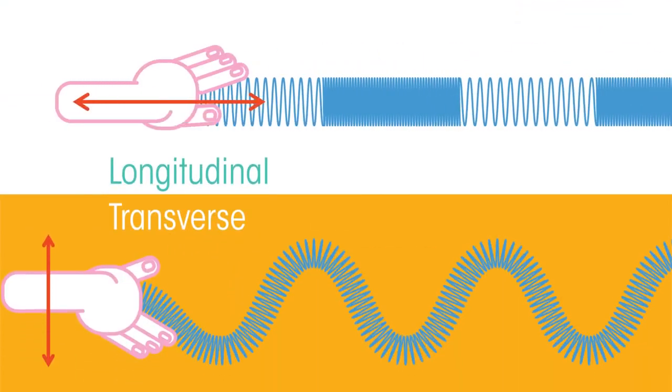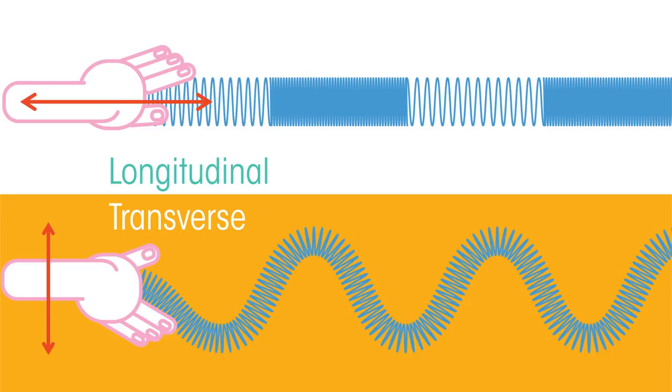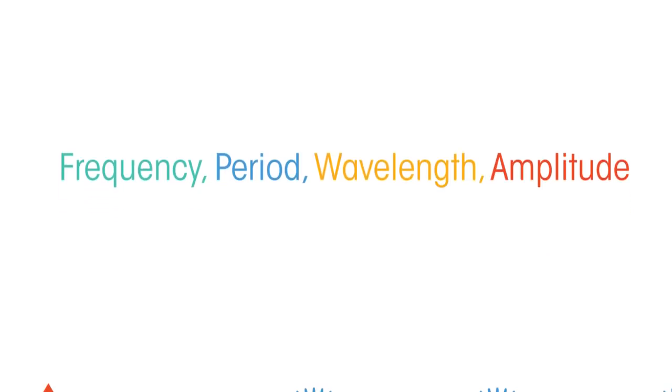There are two types of waves, which we look at in more detail in another video but the basic features are the same. These four words describe different properties of waves. Let's discover what each one means.